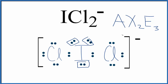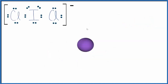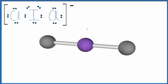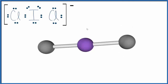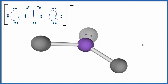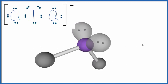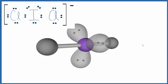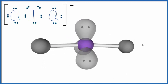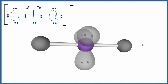Let's take a look at that in 3D to help us visualize it. The purple will be the central iodine atom. Let's add our 2 chlorine atoms — those are single-bonded and they spread out to be as far away as they can from each other. And then we have 3 lone pairs. Lone pairs occupy space, and these 3 lone pairs end up giving us a linear molecular geometry.